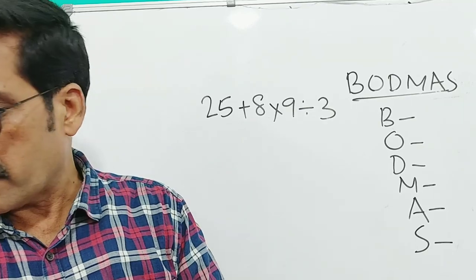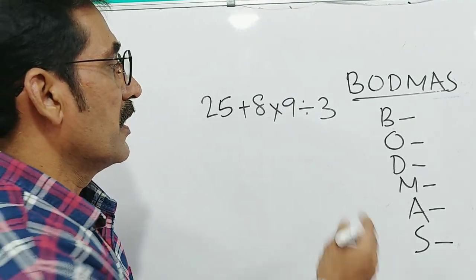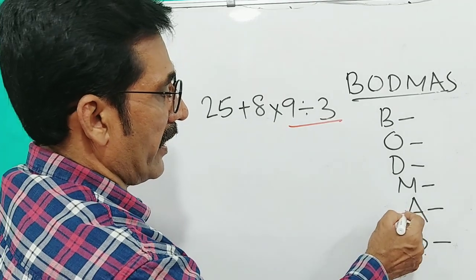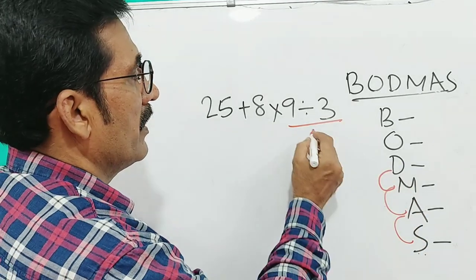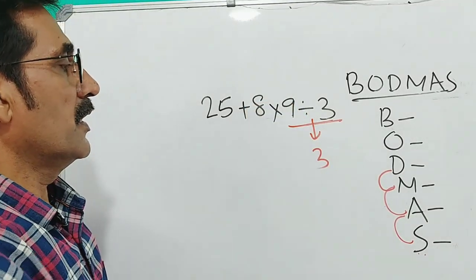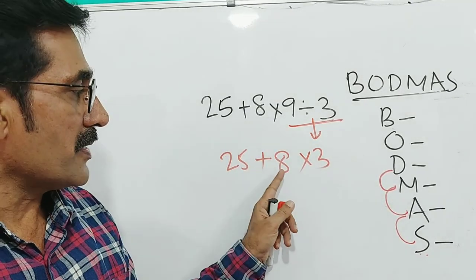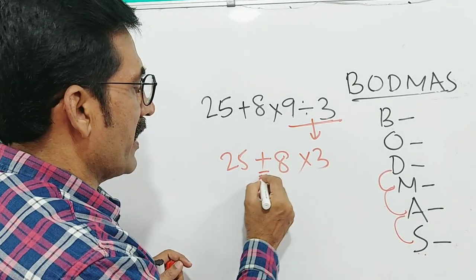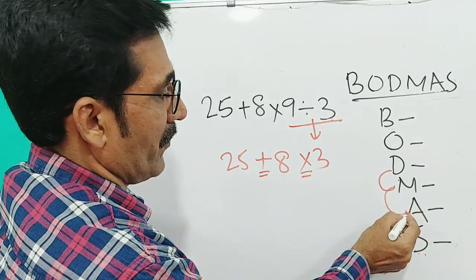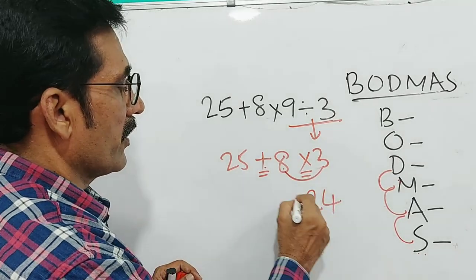Let us take another example: 25 plus 8 into 9 divided by 3. Here you can see two more operations. Which operation will we do first? Division, because the order is: last is subtraction, before that addition, before that multiplication, before that division. So division will be done first. 9 divided by 3 is 3, giving us 25 plus 8 into 3. Now we see addition and multiplication — multiplication comes first: 8 into 3 is 24.